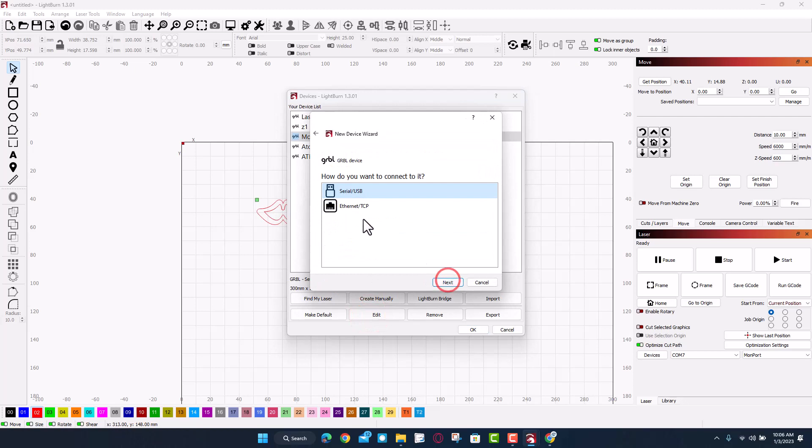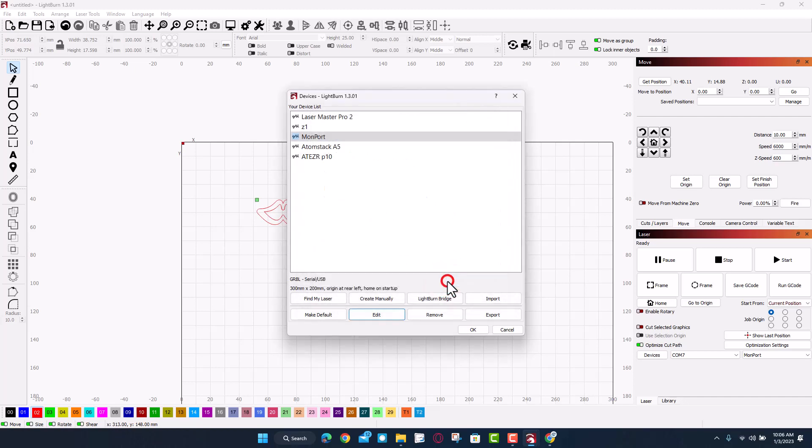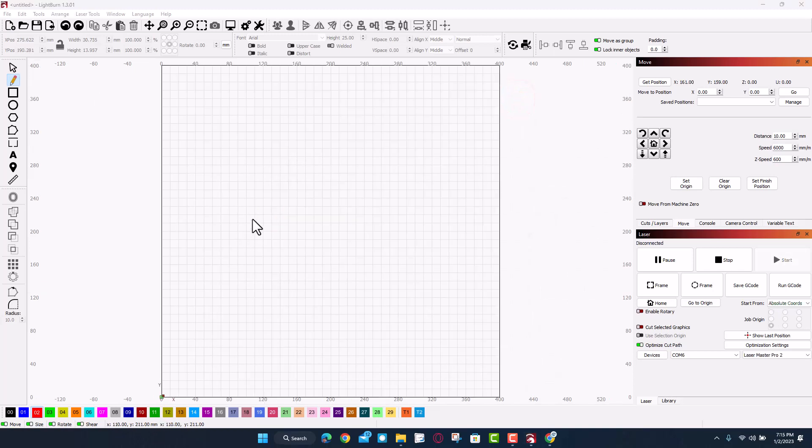It goes through those exact same things: serial USB Monport 300 by 200, it homes to the rear left and I wanted it to auto home. Those are the settings I have for the Monport in Gerbil.